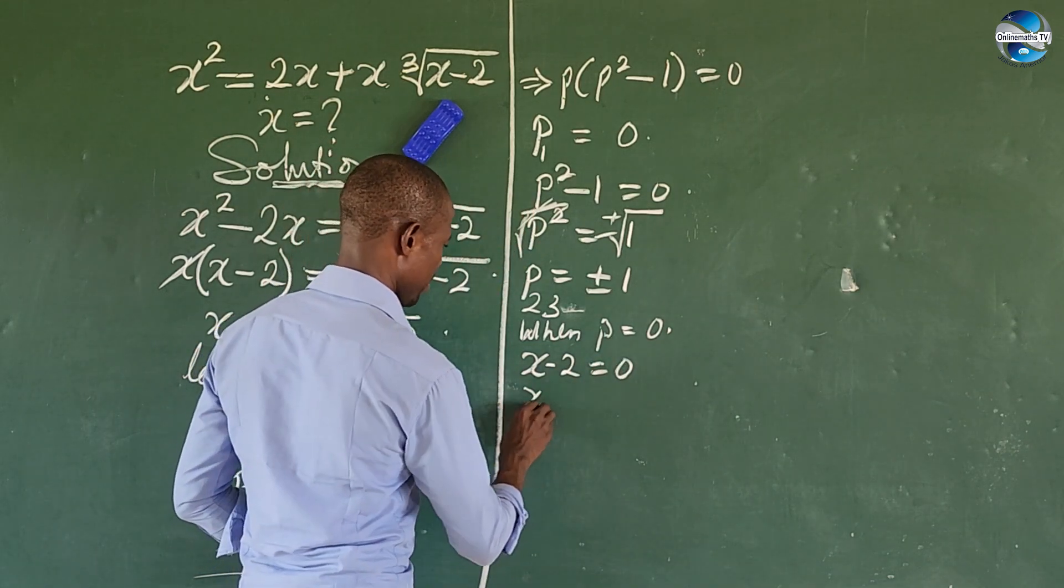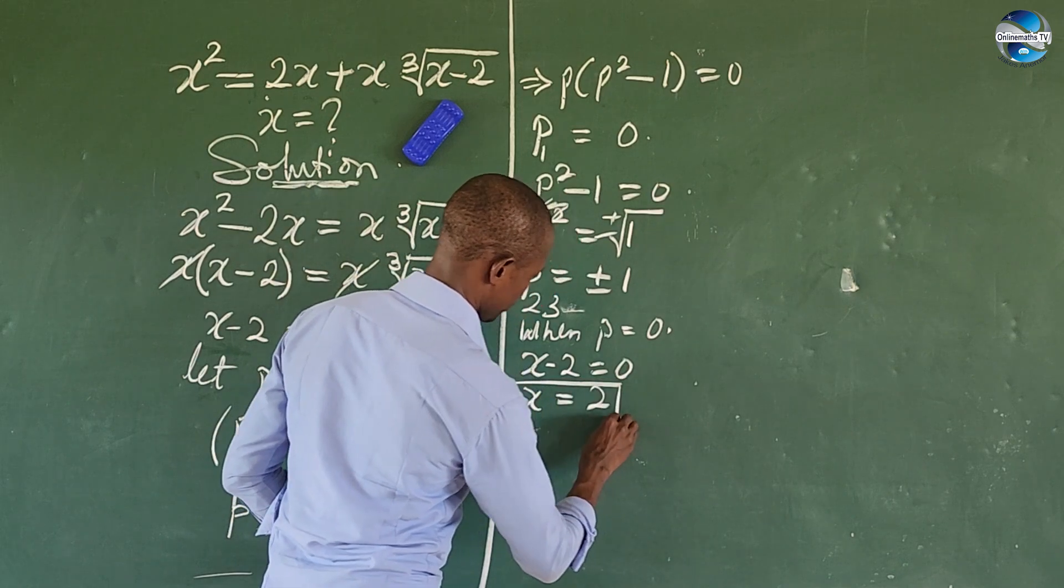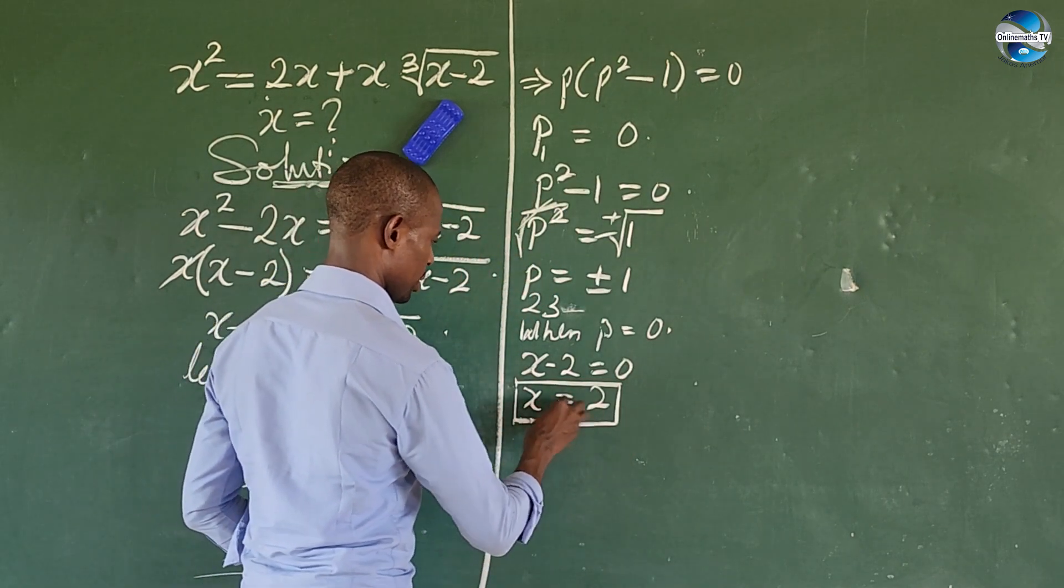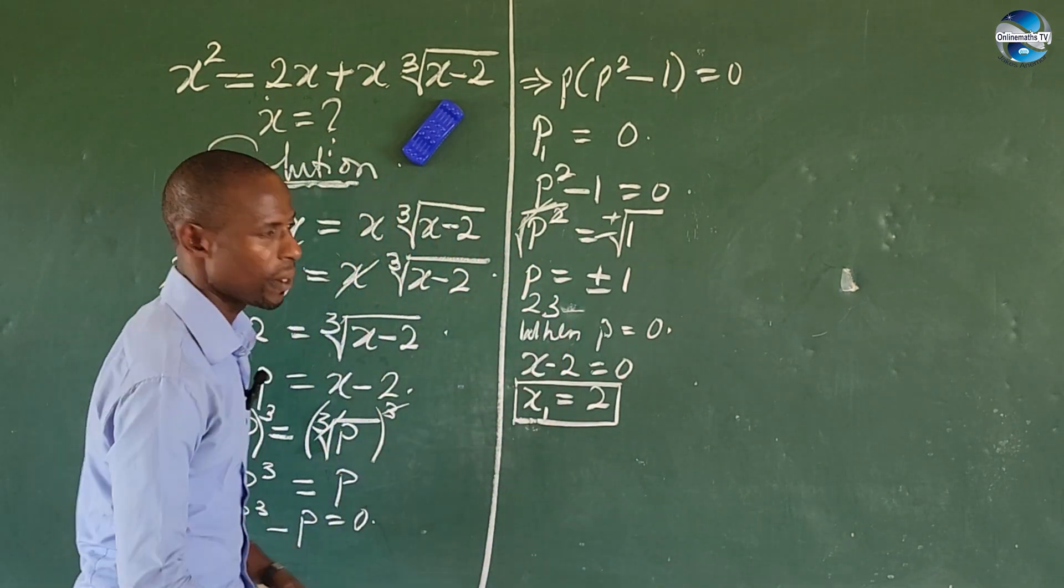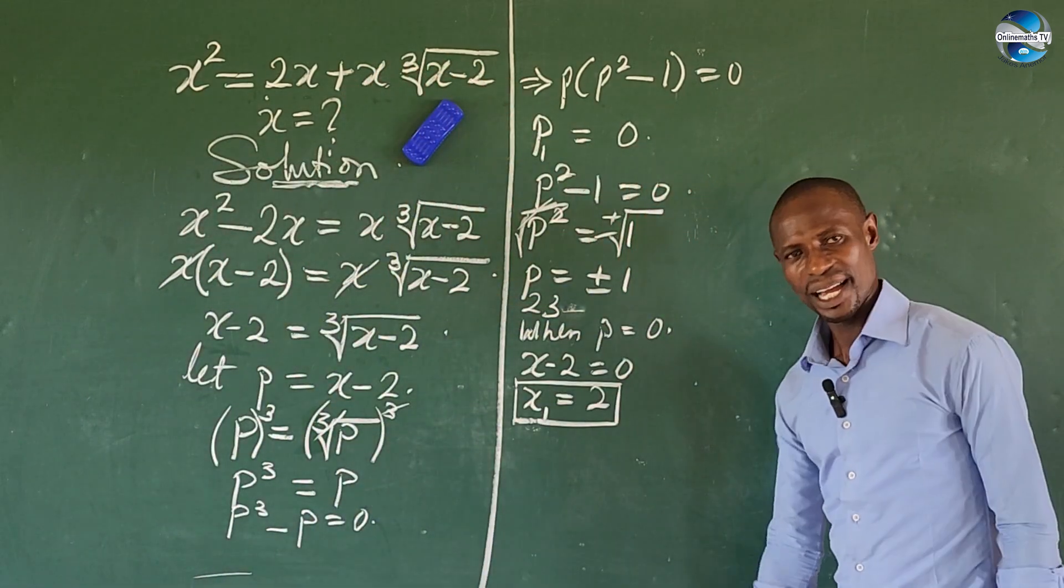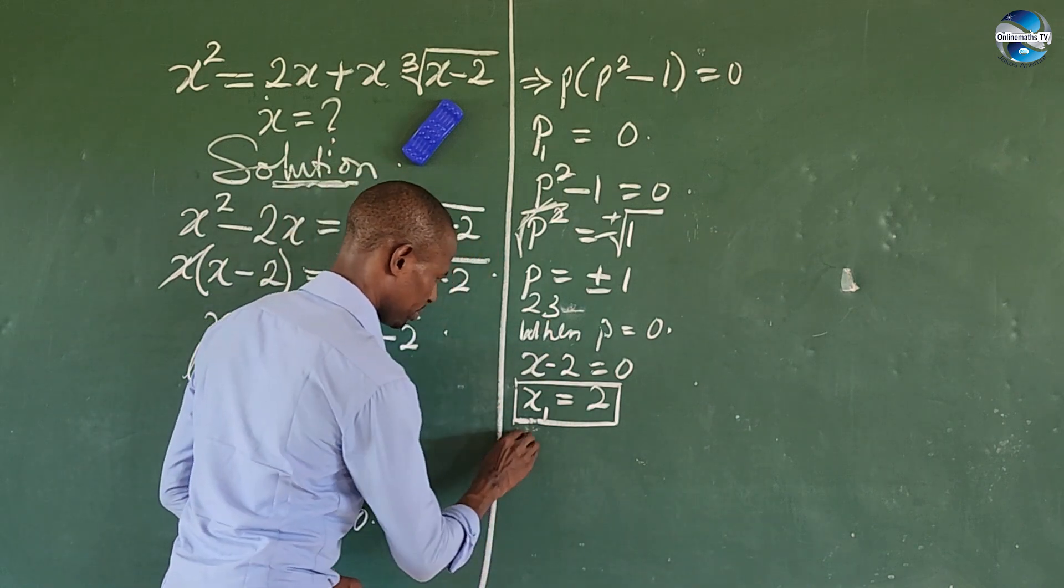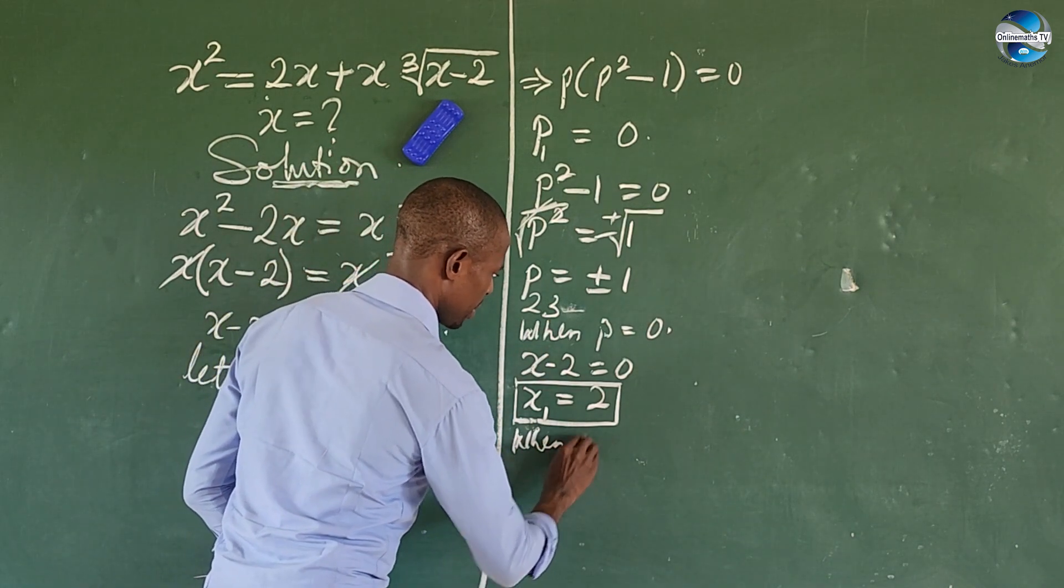Then we now have x equals 2. This is the first solution, this is the first solution x₁ to this radical equation.